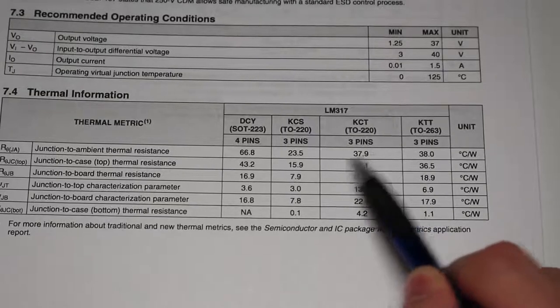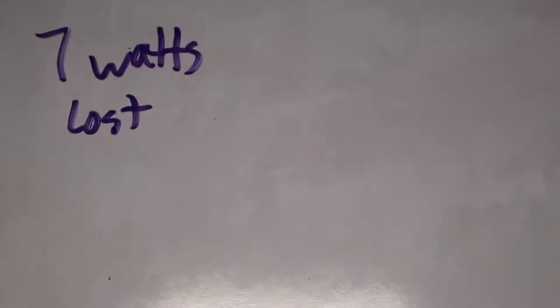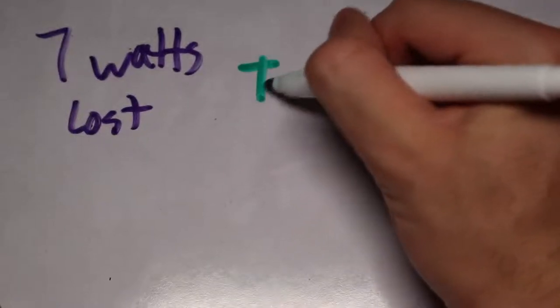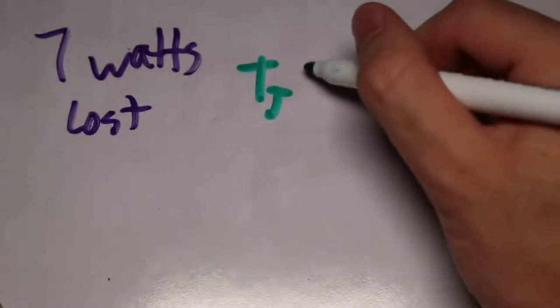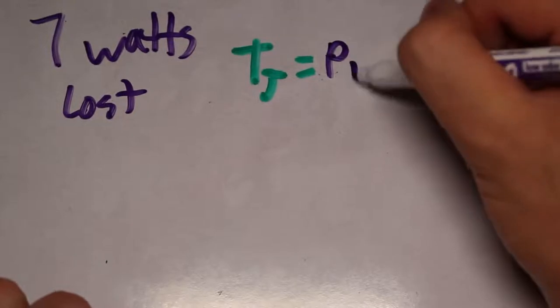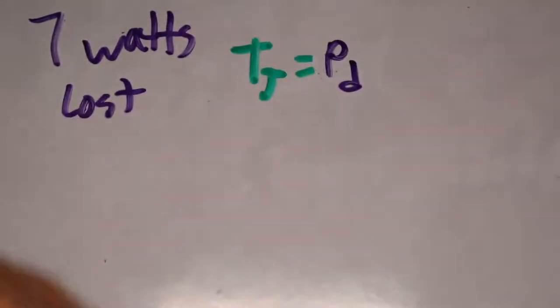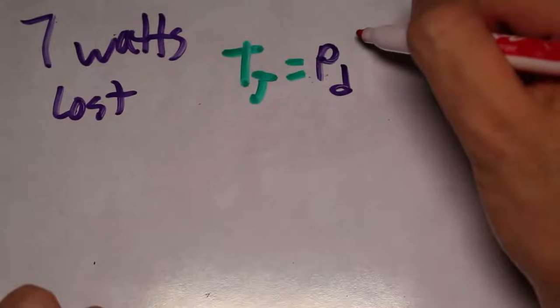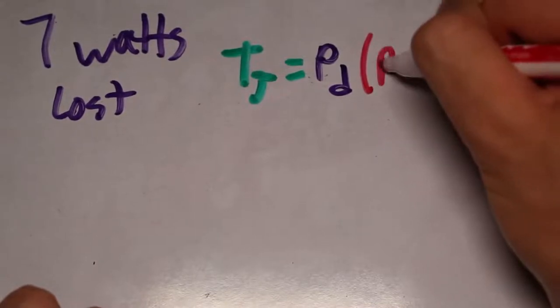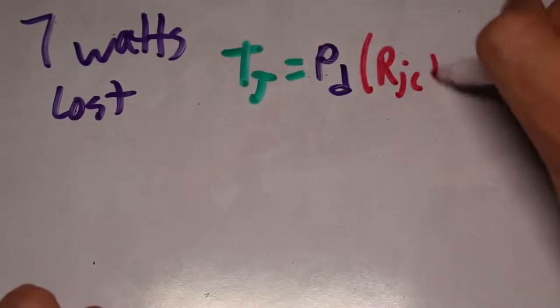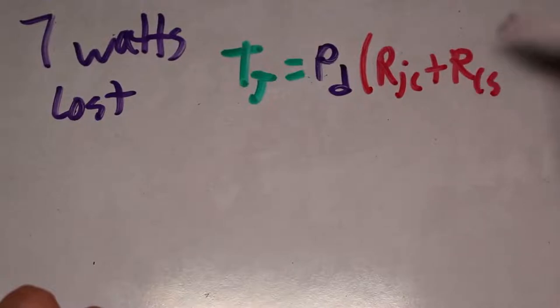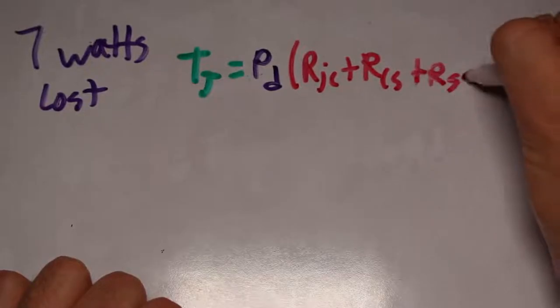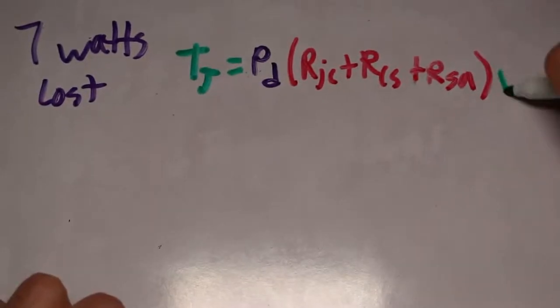Now that we know these important values, we can take a look at an important equation that will allow us to calculate the expected heat. Going back to the example earlier, we already know that our expected power loss is seven watts. We can use this equation. Junction temperature equals the power multiplied by the junction to case resistance, plus the case to surface resistance, plus the surface to air resistance, and finally, plus the ambient temperature.